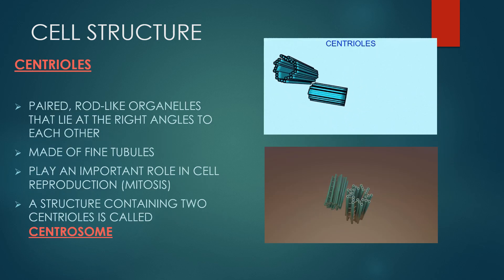Centrioles are paired barrel shaped organelles located in the cytoplasm of animal cells near the nuclear envelope. Centrioles play a role in organizing microtubules that serve as the cell skeletal system. They help determine the locations of the nucleus and other organelles within the cell. They play an important role in cell reproduction in mitosis. A structure containing two centrioles is called centrosome.